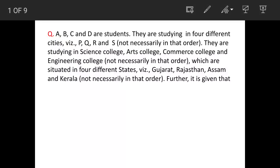We have a question about four students: A, B, C, D. They are studying in four different cities — not necessarily in that order. The cities are P, Q, R, S. They are studying in Science, Arts, Commerce and Engineering colleges — not necessarily in that order.